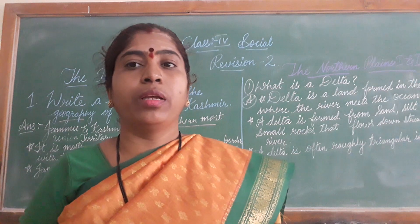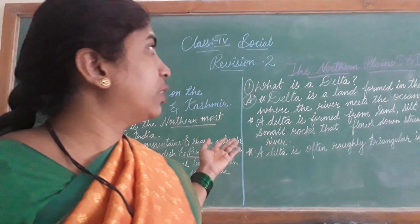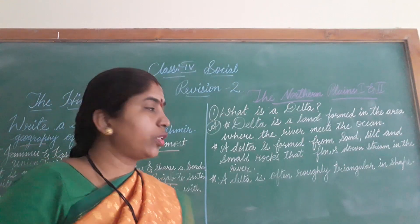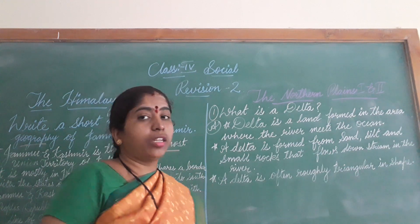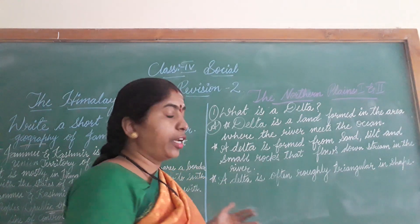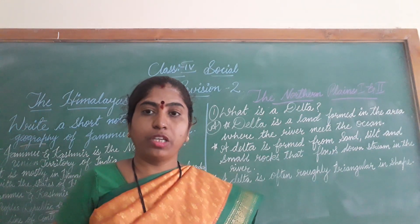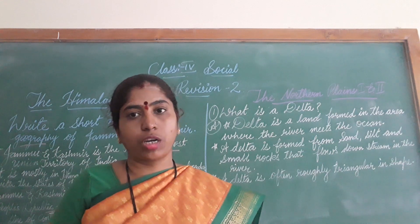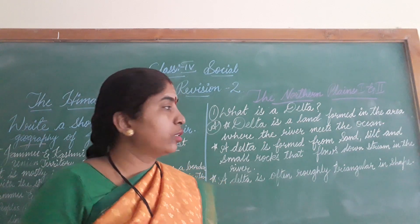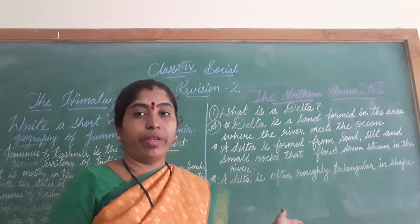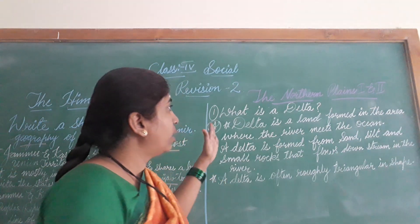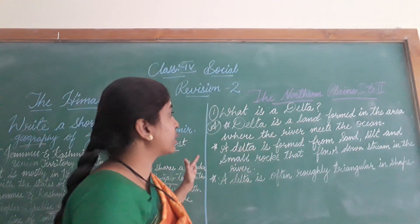Now let us see for the 3rd and 4th chapters — that is the Northern Plains 1 and 2. Here you have more long answers, and you need to do all the MCQs, fill in the blanks, true or false, and short answers. Those are very easy and you can do them quickly. Only the long answers you feel difficult, so I am explaining.